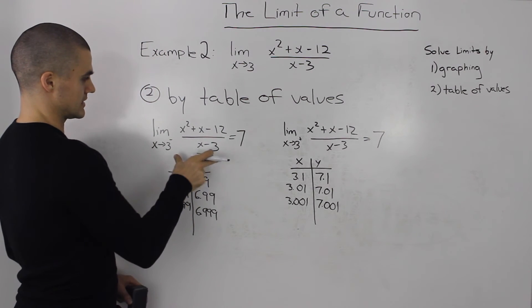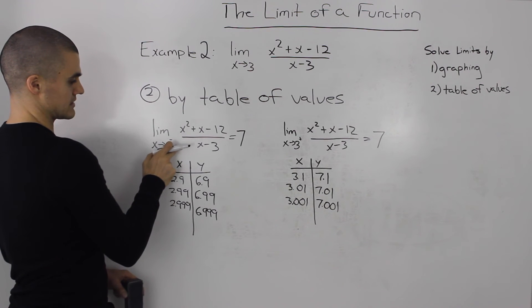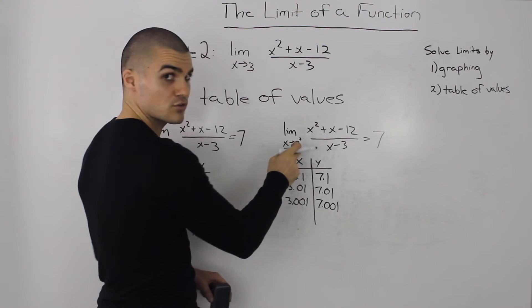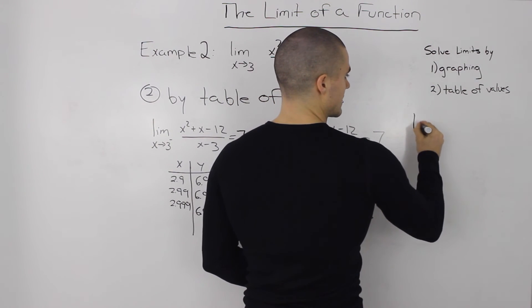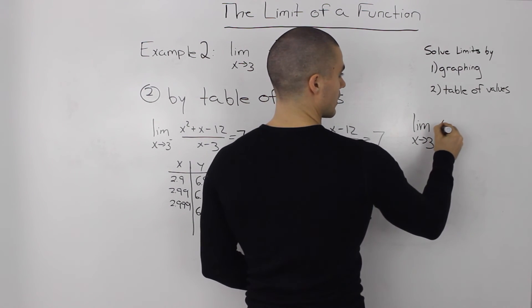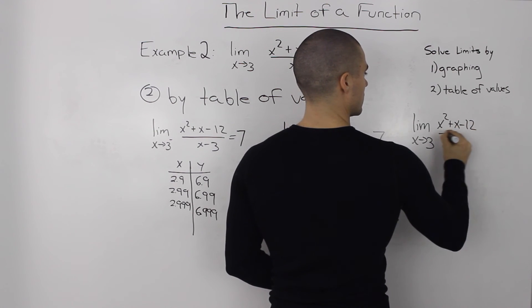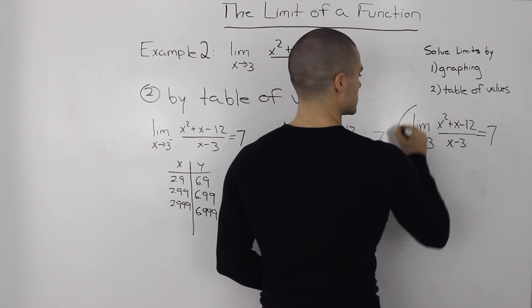Now since the limit of this function as x approaches 3 from the left side equals 7, and as it approaches 3 from the right side also equals 7, we can say that the limit as x approaches 3, the general limit of this function, is also equal to 7.